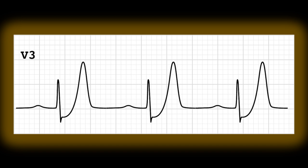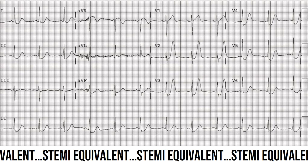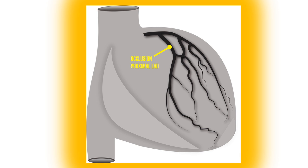This is the pattern I want you to remember when you think of DeWinter T-Waves. DeWinter T-Waves are a STEMI equivalent and signify occlusion of the proximal left anterior descending coronary artery.